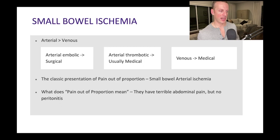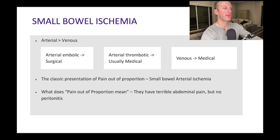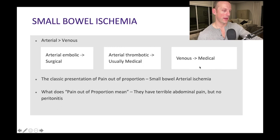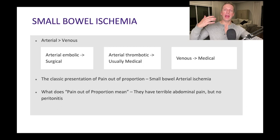Summarizing small bowel ischemia: arterial is more common than venous. Embolic causes are more likely to be surgical with more dense ischemia. Thrombotic causes, because of collaterals, tend to be more medical. Venous causes also tend to be medical. The classic presentation of small bowel arterial ischemia is pain out of proportion — terrible, horrible abdominal pain, yet when you examine them, they have no peritonitis. Their belly can be soft and minimally tender.